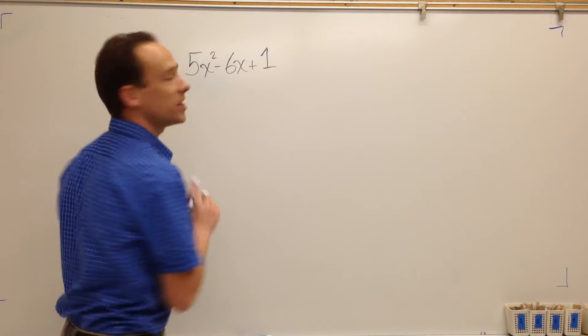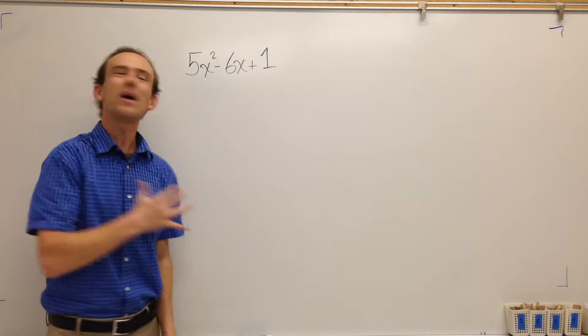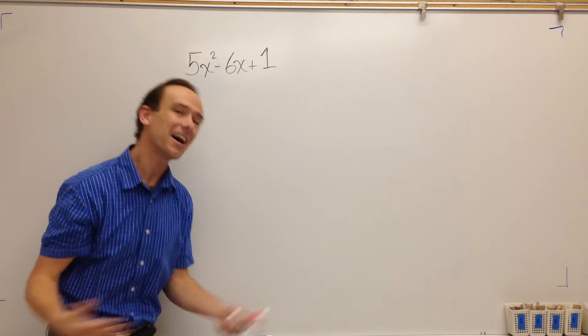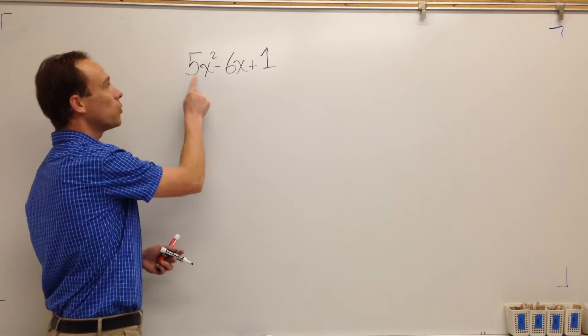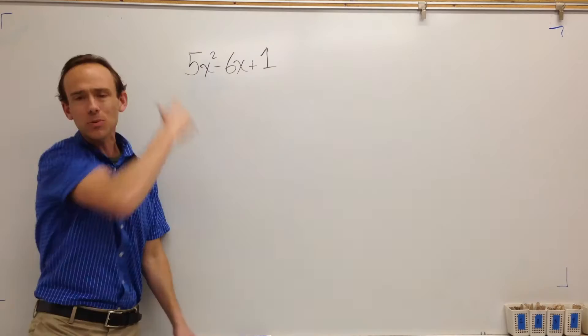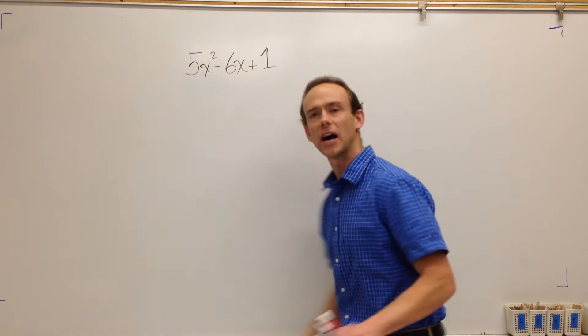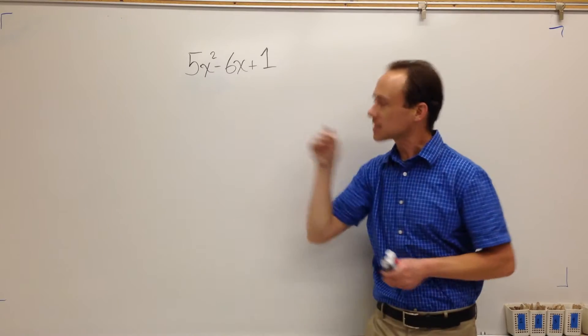And what do we want to learn? We want to learn how to factor, specifically a trinomial. And how do I know this is a trinomial? Well, count with me. One term, two terms, three terms. It's got three terms. That's why it's a trinomial. Tri meaning three, hence the tricycle with three tires.